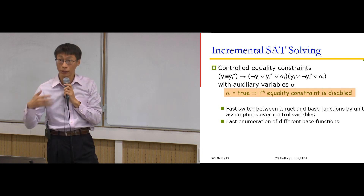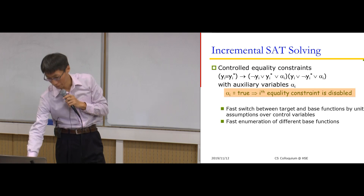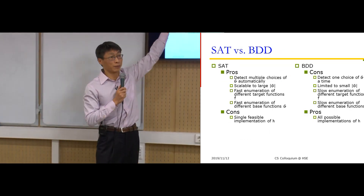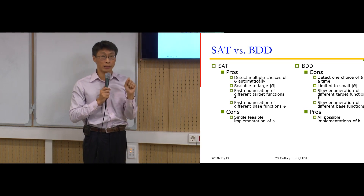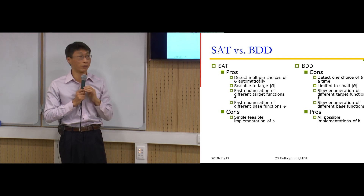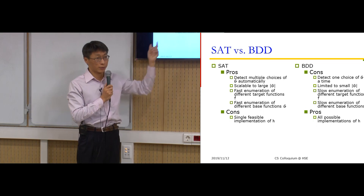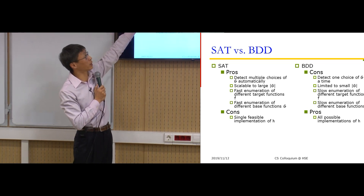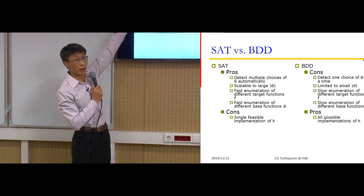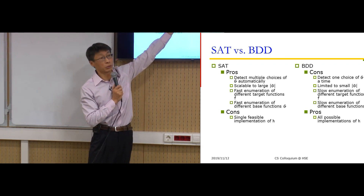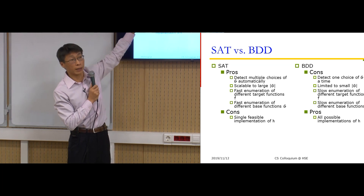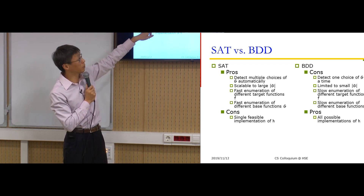In this way, we can quickly enumerate different replacements for the F function. Here is a comparison of SAT versus BDD. BDD was commonly used in the 1990s; SAT is commonly used from the 2000s onward. For SAT solving, we can detect multiple choices of G automatically by incremental SAT solving, and it scales to very large base functions. We can enumerate different target functions and different G choices by incremental SAT solving. However for BDD, there is no such incremental property — you need to build each BDD individually.